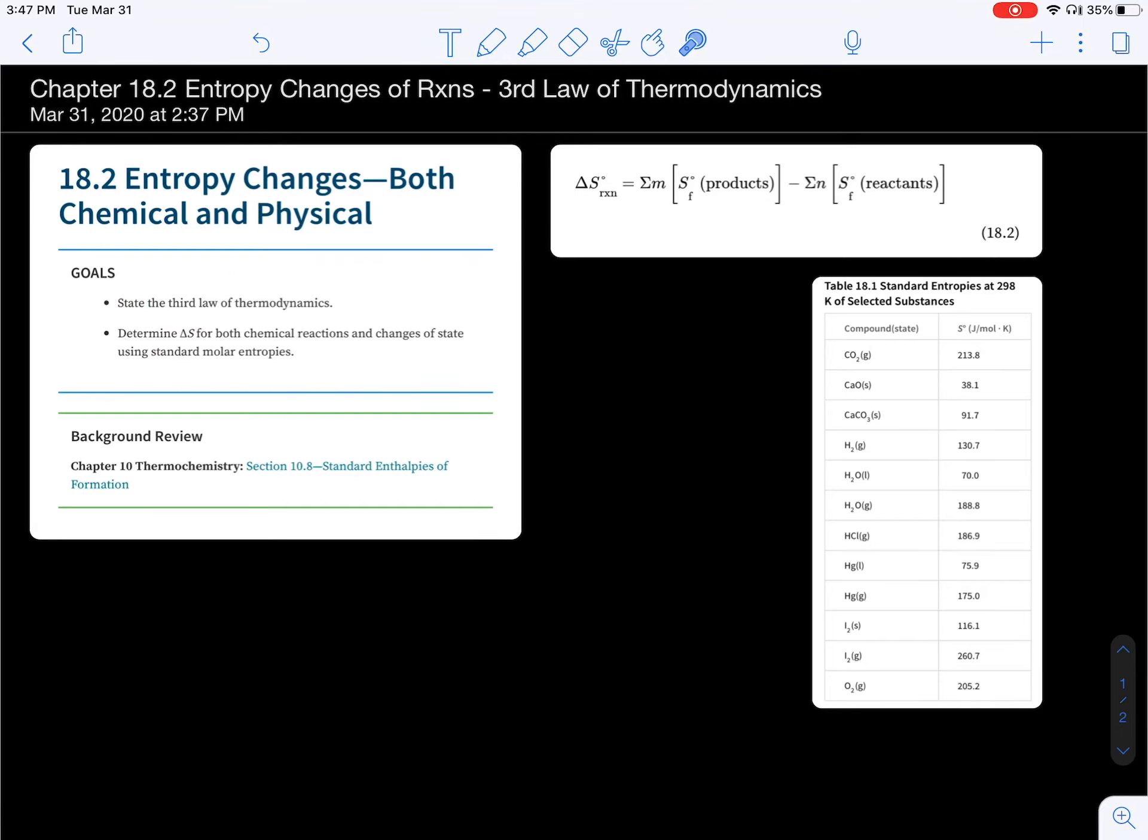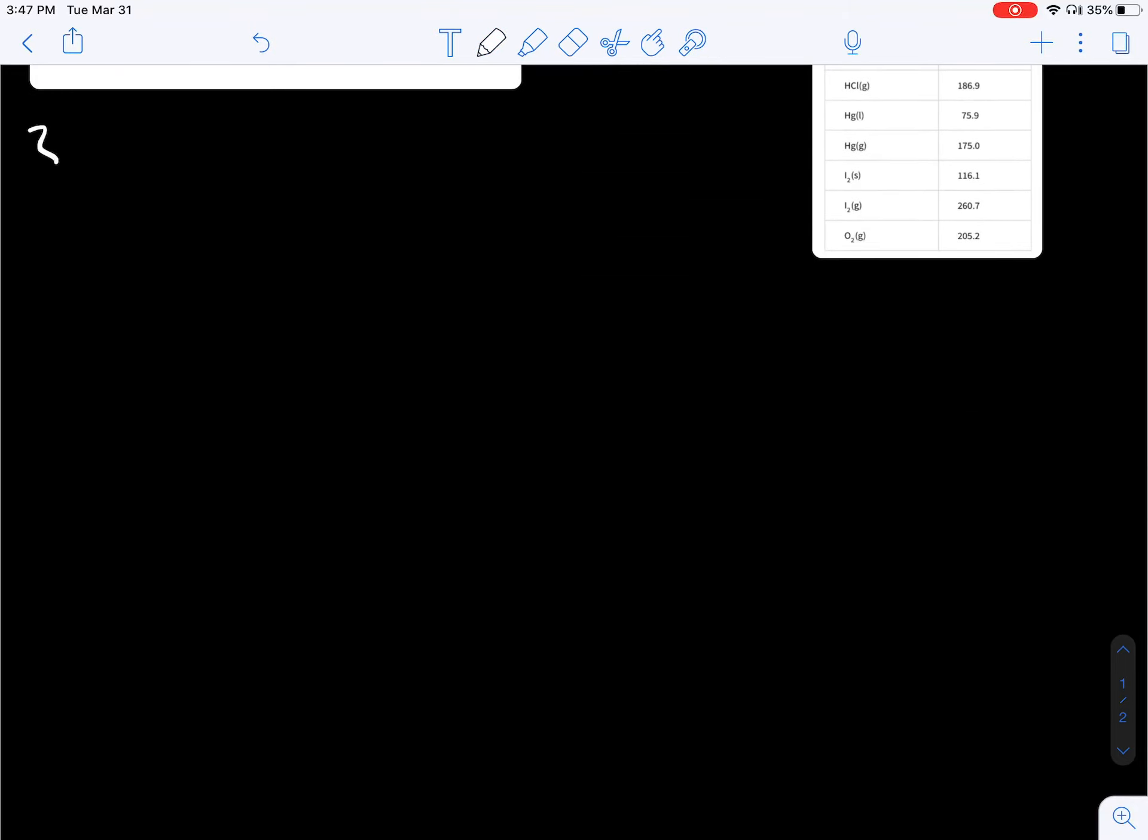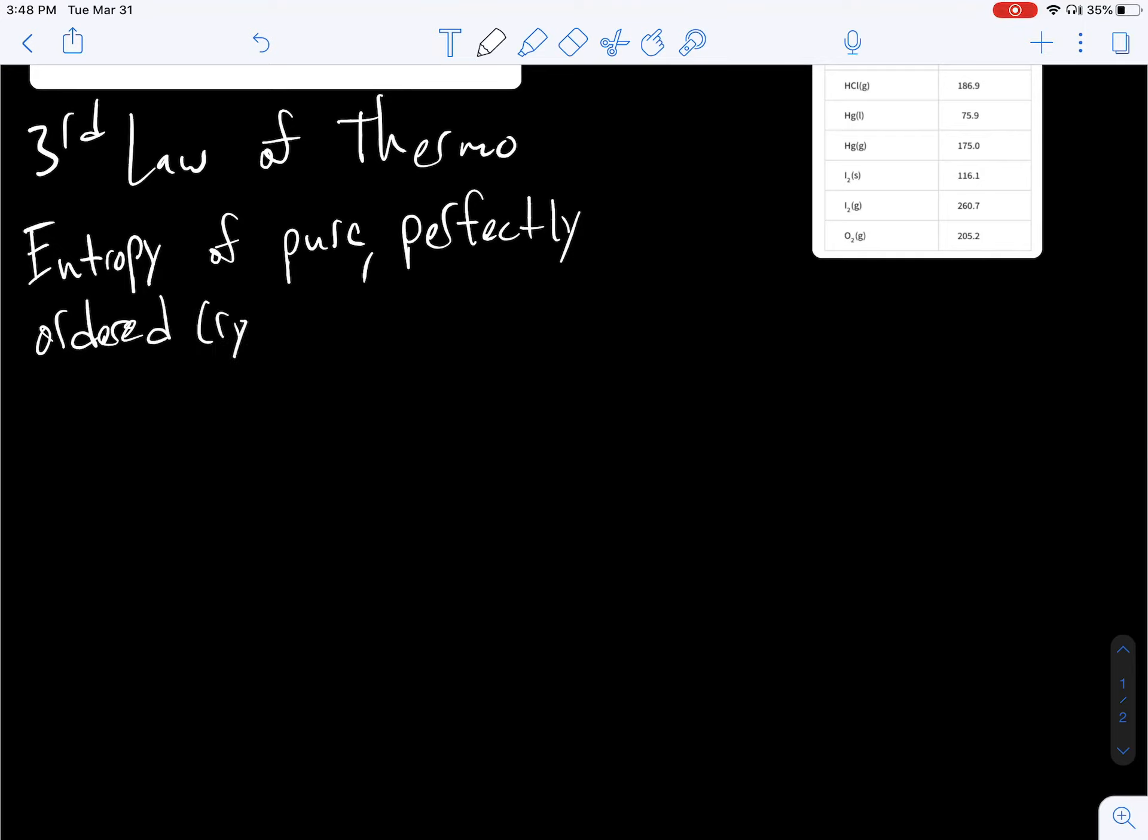So the third law of thermodynamics helps us actually calculate delta S, actually calculate the numerical values of entropy for reactions. This definition helps us define entropy in terms of real-life conditions. Entropy of pure, perfectly-ordered crystalline solid at absolute zero has very, very low entropy.